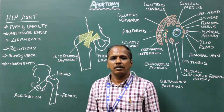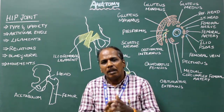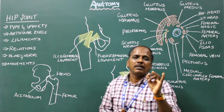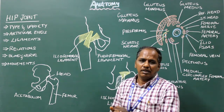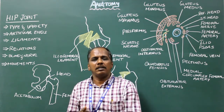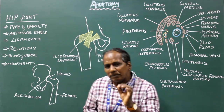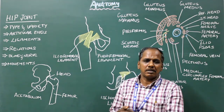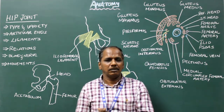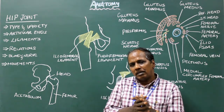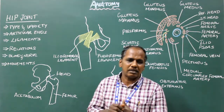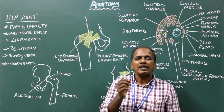Movements. Flexion of the hip joint is by iliacus, psoas major, and pectineus muscle. Extension is by gluteus maximus, hamstring muscles, and tensor fasciae latae. Adduction is by adductor longus, adductor brevis, adductor magnus, and gracilis muscle.